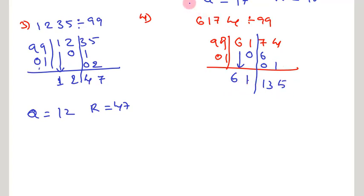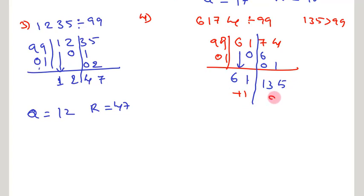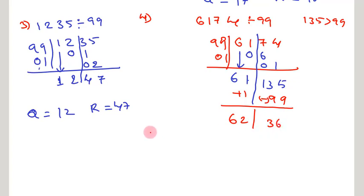But if you observe this, our remainder 135 is more than the divisor 99. Whenever we get a remainder more than our divisor, then we have to add 1 to the quotient and subtract the divisor from the remainder part. So when adding 1 to the quotient part, you get 62 as the quotient. And subtracting 99 from 135, you get 36 as the remainder.